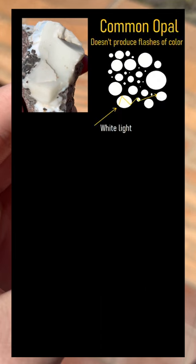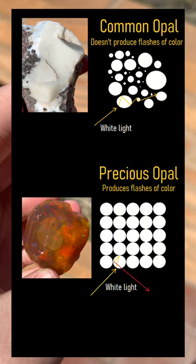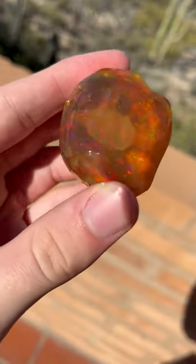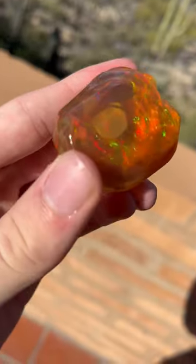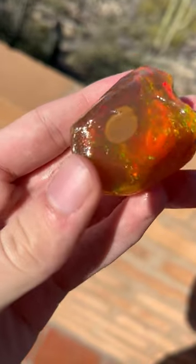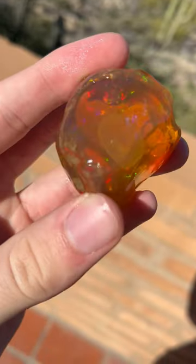If a piece of opal has a grouping of silica spheres which are numerous different sizes, it will not produce any flashes of color. On the other hand, if there is a large patch of silica spheres which are the same size adjacent to one another, and within a specific range of sizes, light entering the opal spheres will bounce around and diffract back a certain wavelength of visible light.